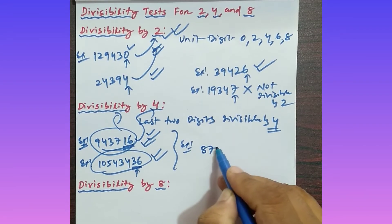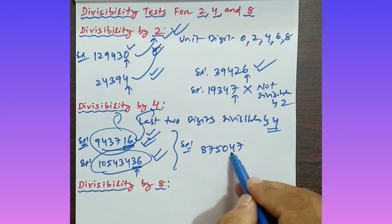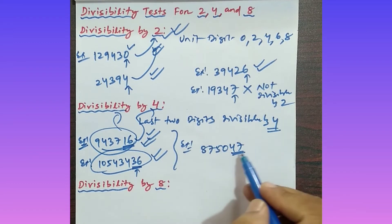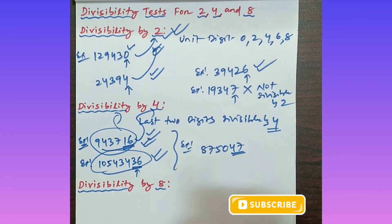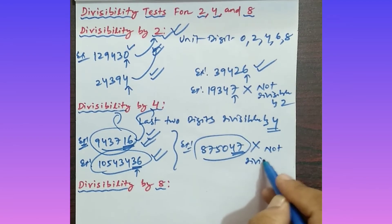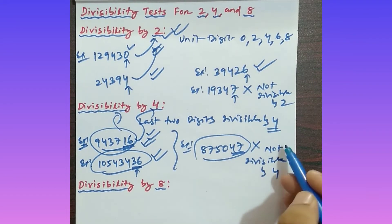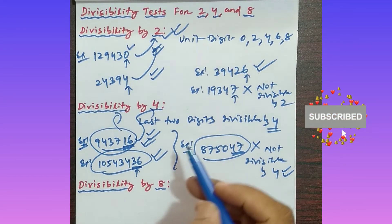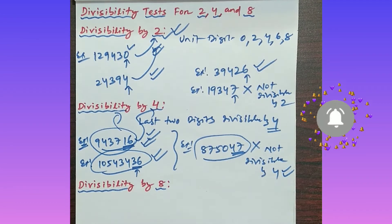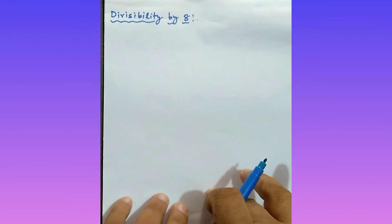One more example: take 875047. The last two digits are 47. Is 47 divisible by 4? No, 47 is not divisible by 4. So this whole number is also not divisible by 4. Remember: if the last two digits are divisible by 4, the whole number is divisible by 4 — otherwise it is not.